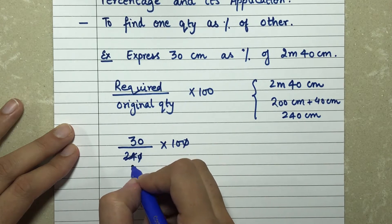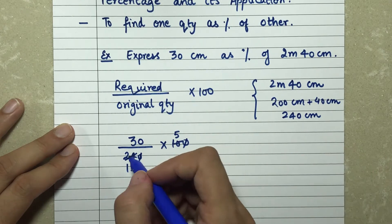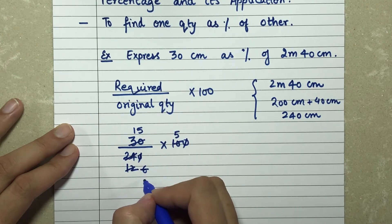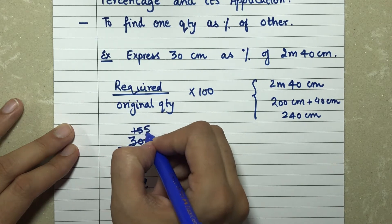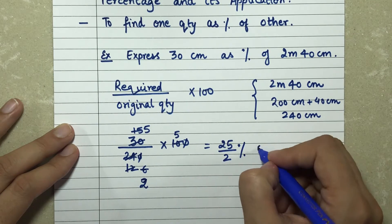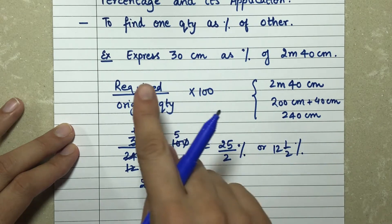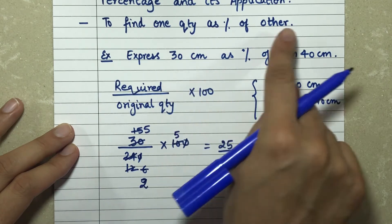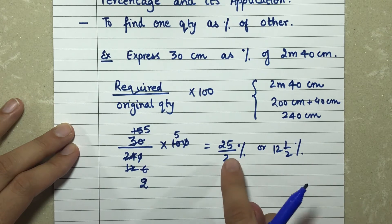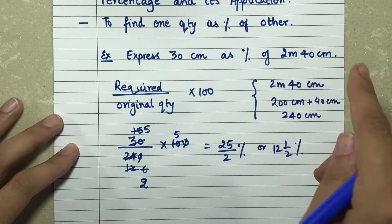Solving 30/240 × 100, we simplify to get 25/2 percent, which is 12½ percent. So 30 centimeters is 12½ percent of 2 meters 40 centimeters. That is how we express one quantity as a percentage of another.